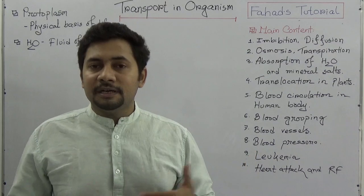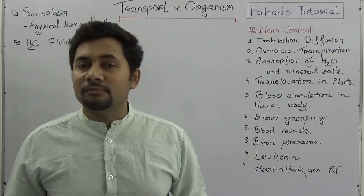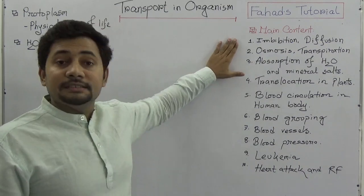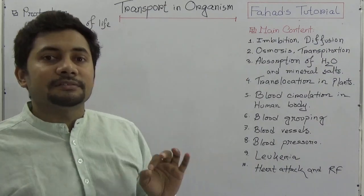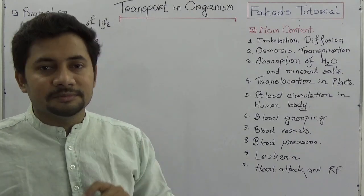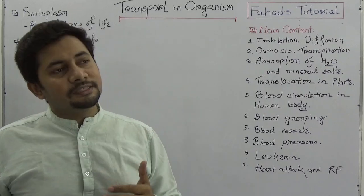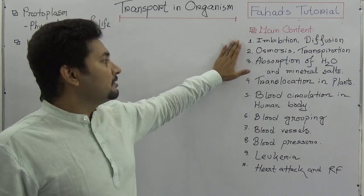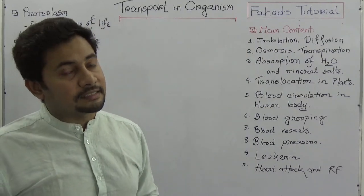I hope you'll be able to understand all the topics clearly, which will be much more helpful for understanding next-level biology — when you study blood circulation and more about the absorption of water and minerals. The main contents we need to study in this chapter include imbibition, diffusion, osmosis, and transpiration. You may have already studied some of these in your previous classes, but they will be discussed again here.